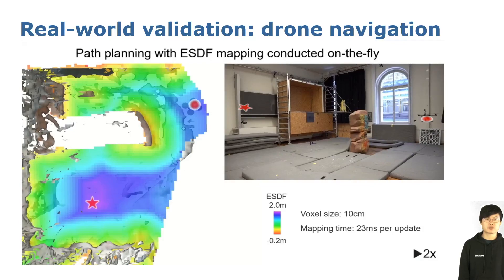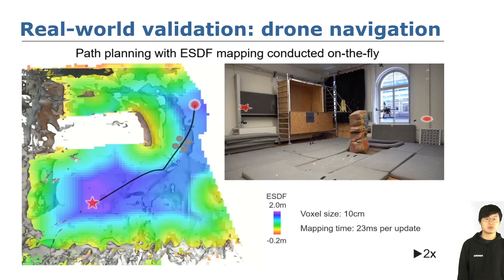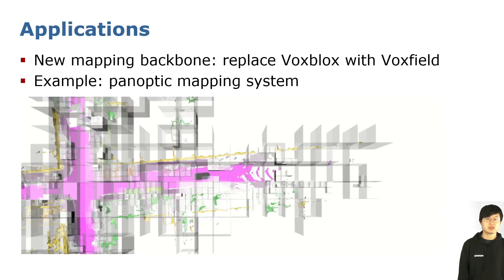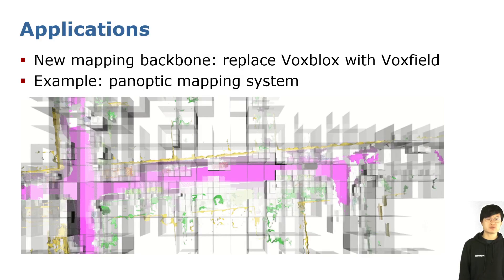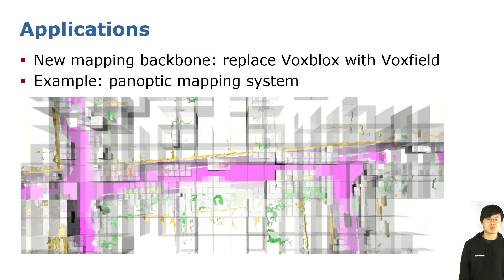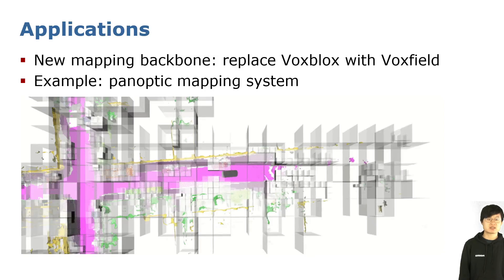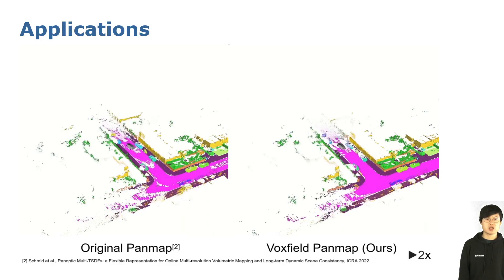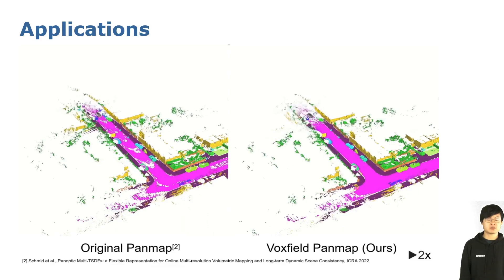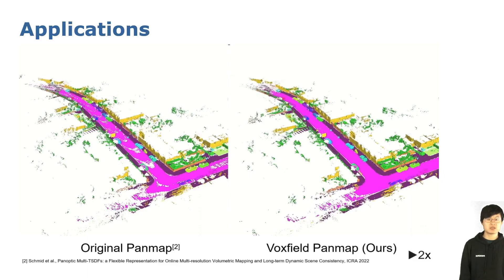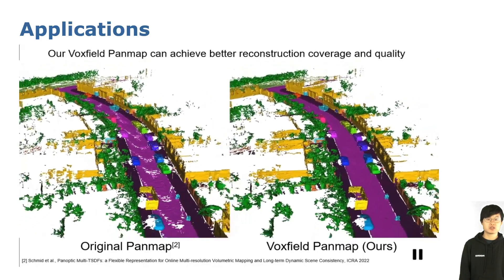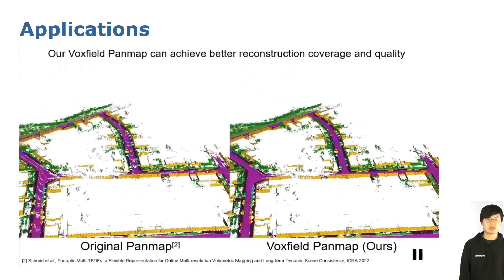Additionally, we validate Vox Field's ESDF mapping in a real-world experiment onboard a drone. The drone navigates safely from the red dot to the red star, and all computations are conducted by the drone itself. For applications, one can use Vox Field as the new mapping backbone and replace Vox Blocks with Vox Field in high-level mapping systems, such as a multi-resolution panoptic mapping system. Each color represents the panoptic sub-map label containing instance-level semantic information. Our Vox Field PanMap achieves better reconstruction quality and coverage than the original PanMap using Vox Blocks as its mapping backbone.